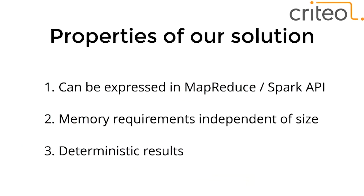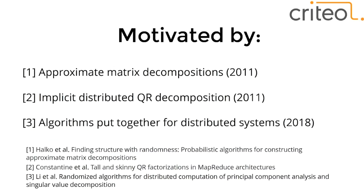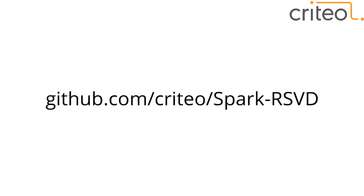The properties of our solution: it can be expressed entirely in MapReduce and Spark APIs, meaning less engineering headache and more supported frameworks. Memory requirements are independent of N, depending only on the number of latent factors needed. We have deterministic results down to machine precision. This is motivated by a large body of work on approximate matrix decomposition and implicit distributed QR. We have created this implementation, open-sourced it, and tested it on very large matrices. If you have similar problems, we recommend trying it.